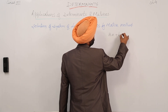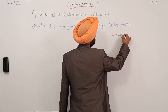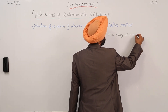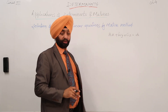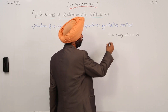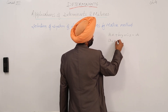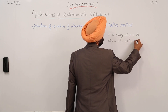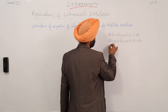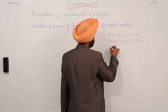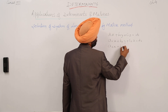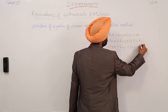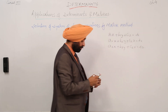We are having: a1x + b1y + c1z = d1, where d1 is the constant term. Similarly, a2x + b2y + c2z = d2, and a3x + b3y + c3z = d3.